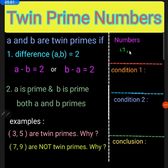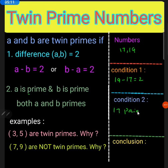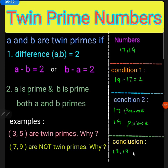Next example: 17 and 19. Nineteen minus seventeen equals two. Seventeen is a prime number and nineteen is also a prime number. Therefore, 17 and 19 are twin primes.